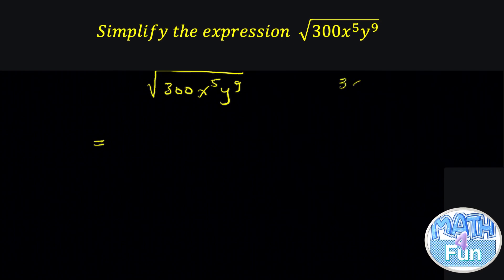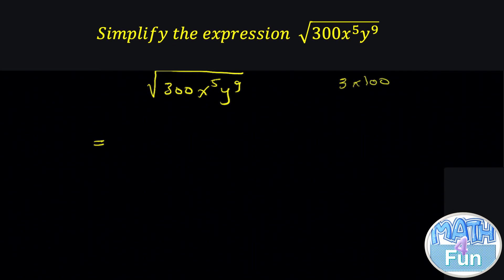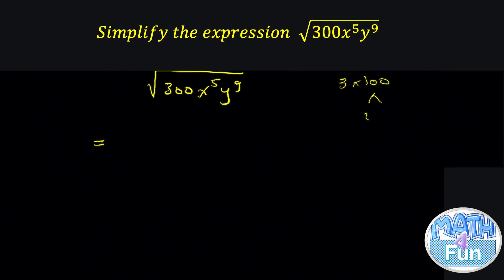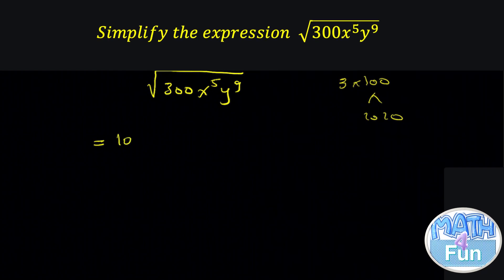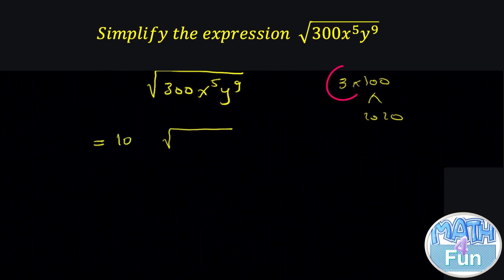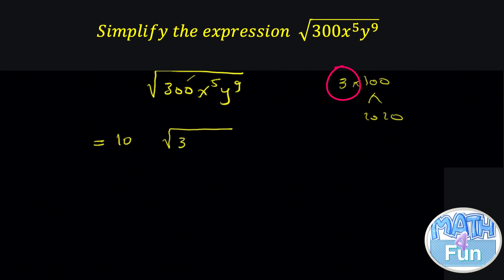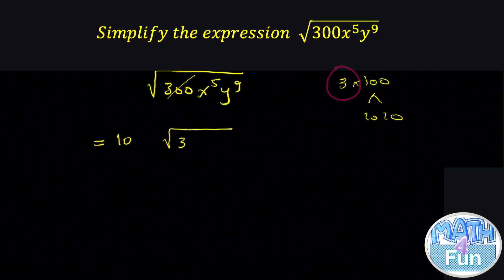Now we have 300, 300 which is 3 times 100. 100, it is 10 times 10. So we can take it one time outside. So it becomes 10 outside radical and we keep inside 3. Now we finish the 300.